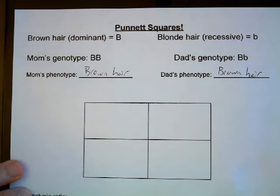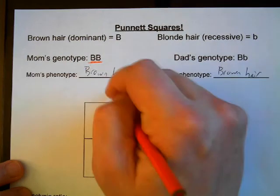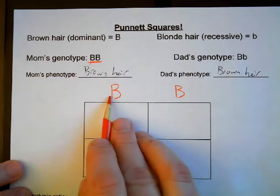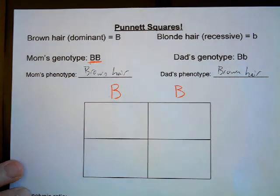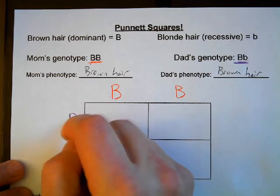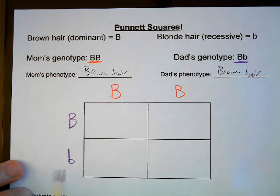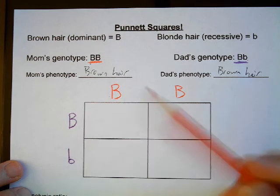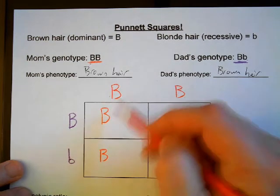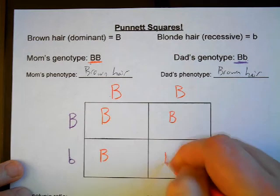To fill out the Punnett square, I like to use separate colors. I'll use red for mom's genotype, and I'm going to put mom's genes on top. I take these two genes and separate them on the top: capital B over this column, capital B over this column. For dad, I'll use purple — dad has capital B, lowercase b — so I put his genes on the side: capital B on the top row, lowercase b on the lower row. Now I fill in the square: take the capital B from the top and put it in the boxes below — capital B, capital B — then take this other capital B and put it in the boxes below — capital B, capital B.